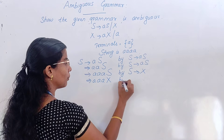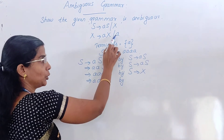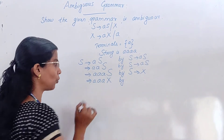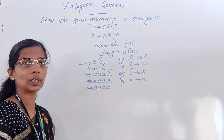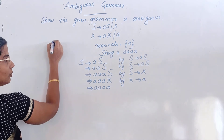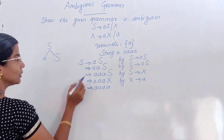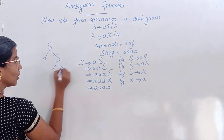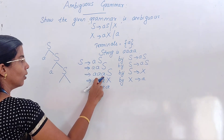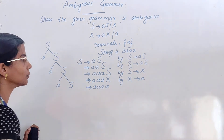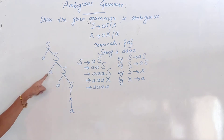Now, what is the parse tree for this derivation? S at the root. S produces A and S. That S produces A and S. That S produces A and S. That final S is replaced by X, and X produces A. Check whether you have got four A's: one, two, three, four.